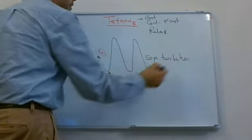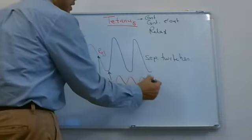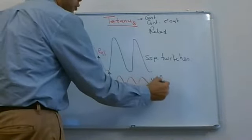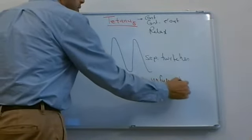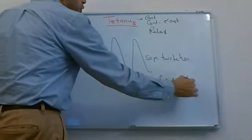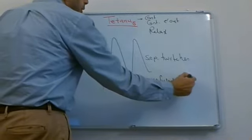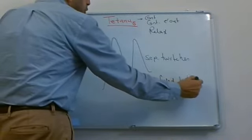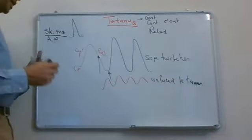If the muscle is stimulated during relaxation, it produces contraction with incomplete relaxation. We name this second situation as unfused tetanus.